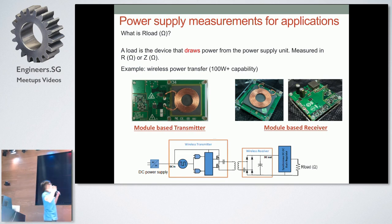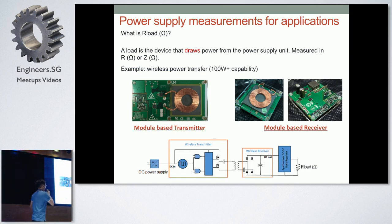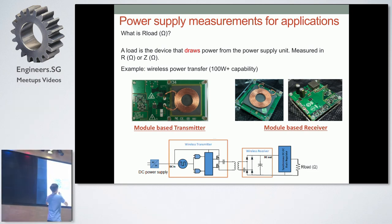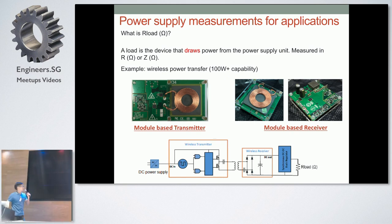So I'll give you a very good example of what I did. This is one of the examples I did for wireless charging projects in my company. So before we understand, let's talk about load. What is R load? You don't hear this all the time, but what is it really about? Basically, it's the device that draws power from the power supply. It's usually measured in resistive ohms or Z ohms for impedance. Very simple module based transmitter and receiver. This is my transmitter, this is my receiver. This module is capable of delivering up to 100 watts plus.